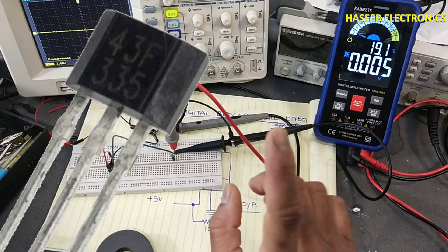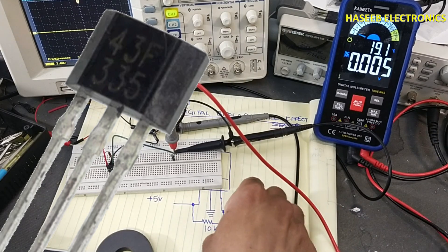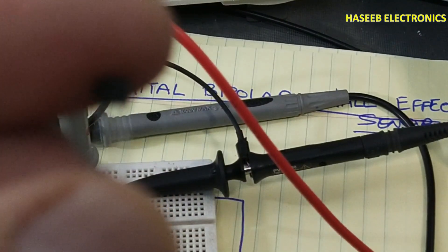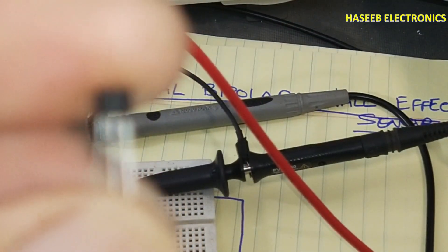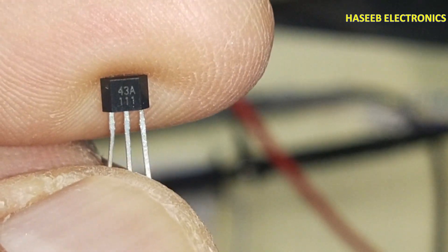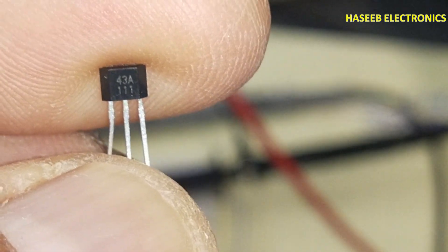Friends, welcome back to my channel. Today we will see this SS43 or AH43 or A3143 unipolar digital hall effect sensor. Marking on this component is 43A, 43F, AH43, like that.